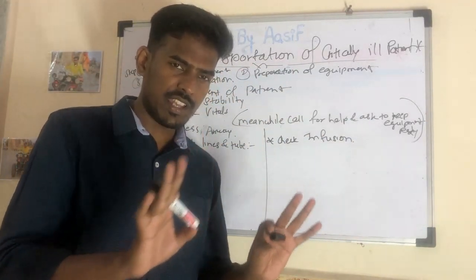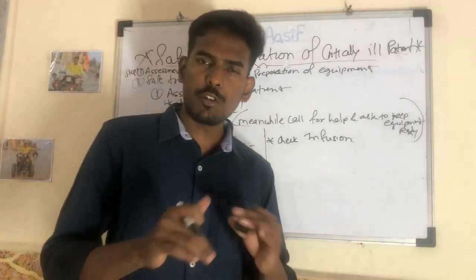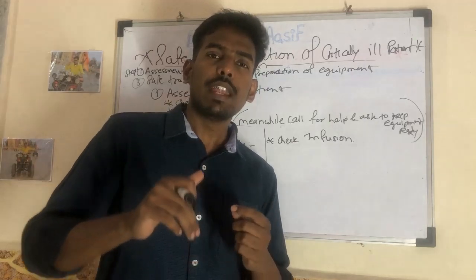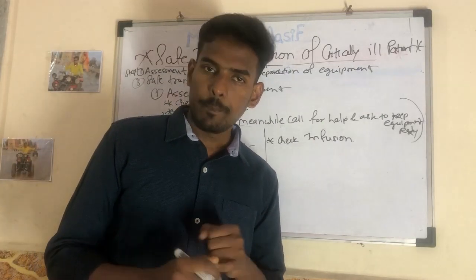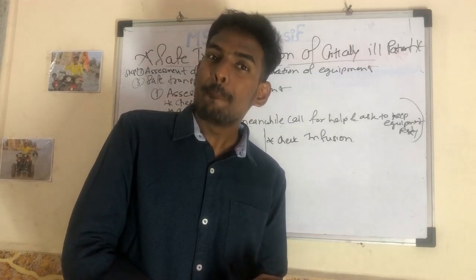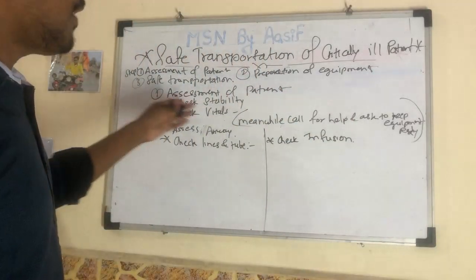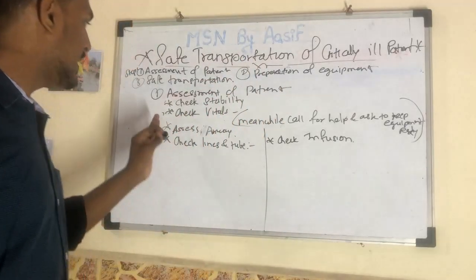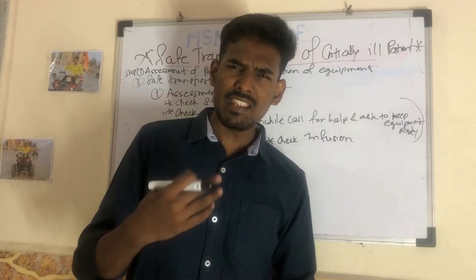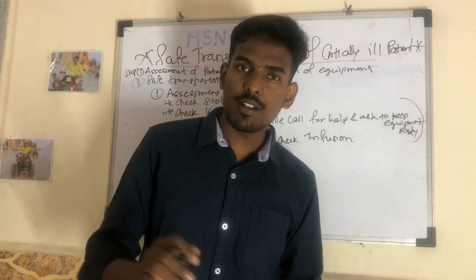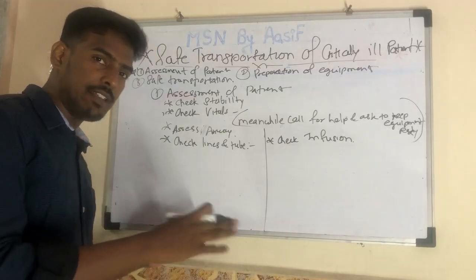First, we check the stability of the patient. Check the airway - is there any problem? Then check vitals: pulse, respiration, BP, oxygen saturation, and temperature. Here we also check blood sugar. Always check the pulse manually as well, because feeling the pulse gives much more characteristics compared to the monitor. Meanwhile, call for help and ask for equipment to be kept ready. Assess the airway - auscultate it, check for inspiratory stridor, and if there is any need for suctioning before transportation, keep it ready.